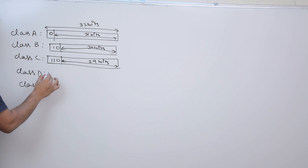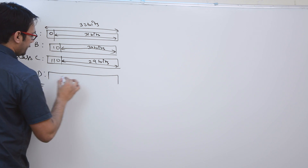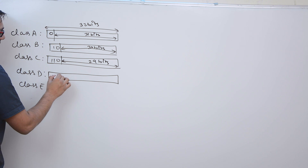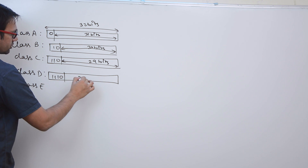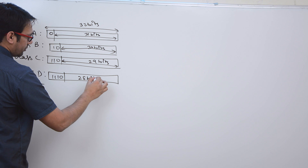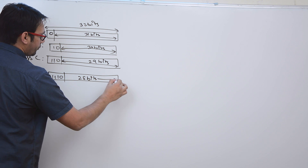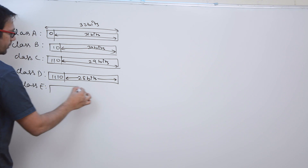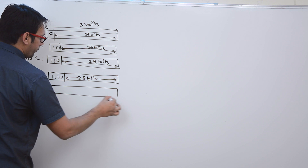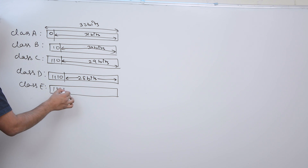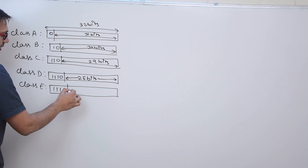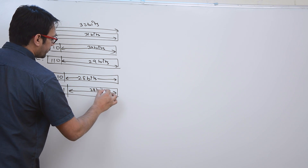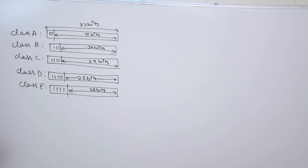In case of class D, the first 4 bits are fixed as 1, 1, 1, 0, and the rest 28 bits can take any combination. In case of class E, the first 4 bits are also fixed, and the rest 28 bits can take any combination.